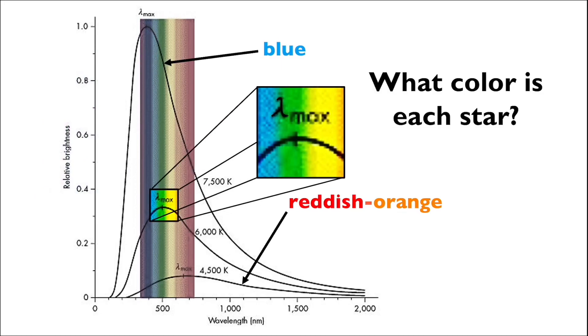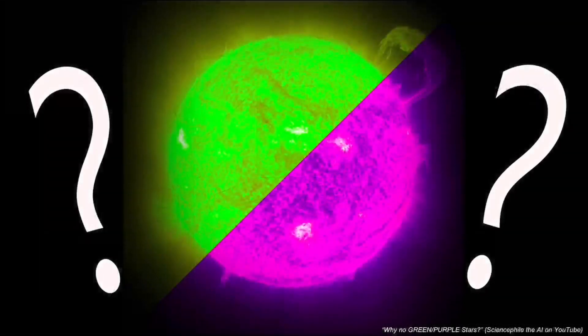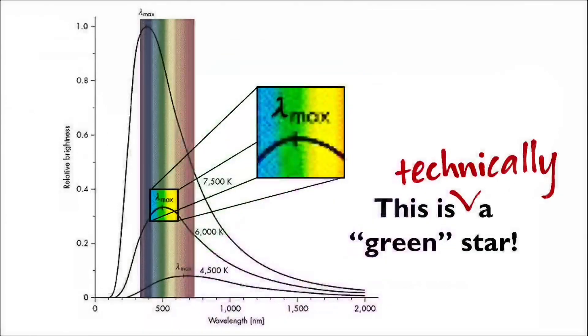But what about this one? It peaks in the green, but is it a green star? Are there any green stars, or purple stars for that matter? Do they even exist? And if they do, why haven't we seen them yet? The thing is, they do exist. This is the blackbody curve of a green star.